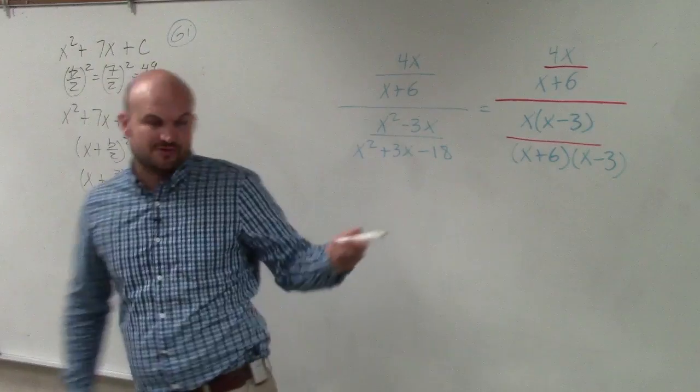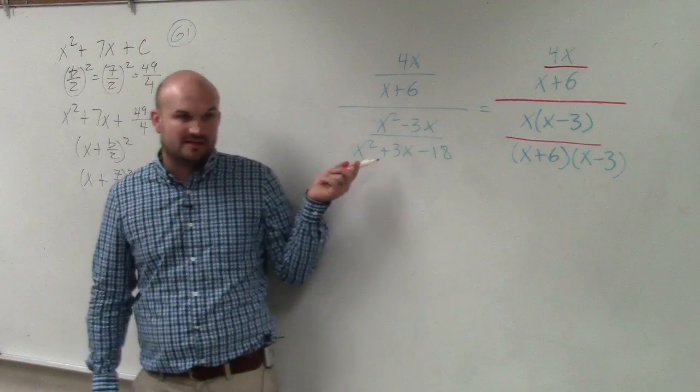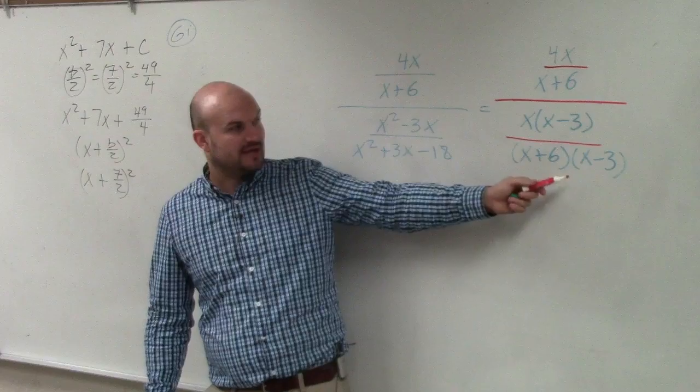Basically, what I did was I said, what two numbers multiply to give me negative 18 and then add to give me a positive 3. That's how I came up with that.